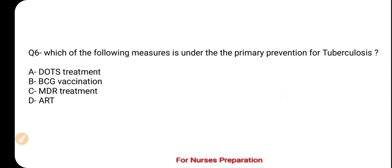Question number 6 is: Which of the following measures falls under primary prevention of tuberculosis? Your options are A. DOTS Treatment, B. BCG Vaccination, C. MDR Treatment, D. ART.